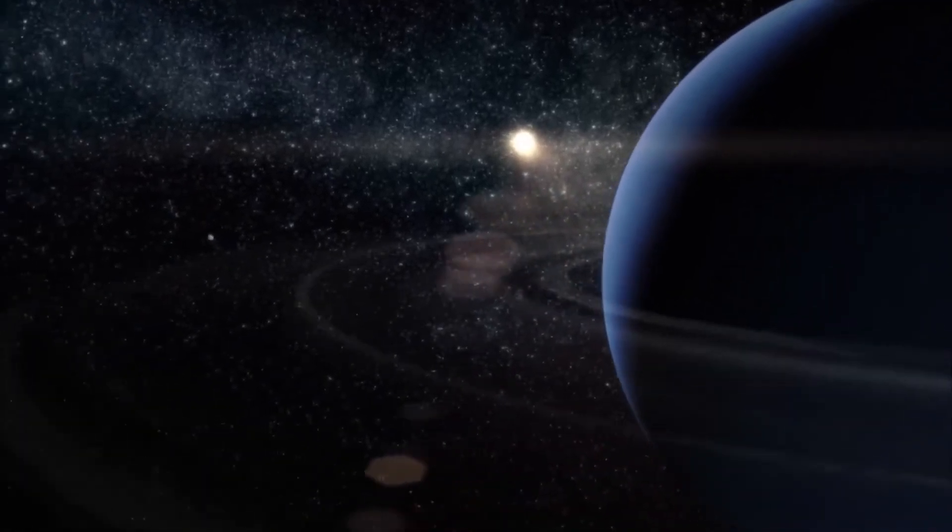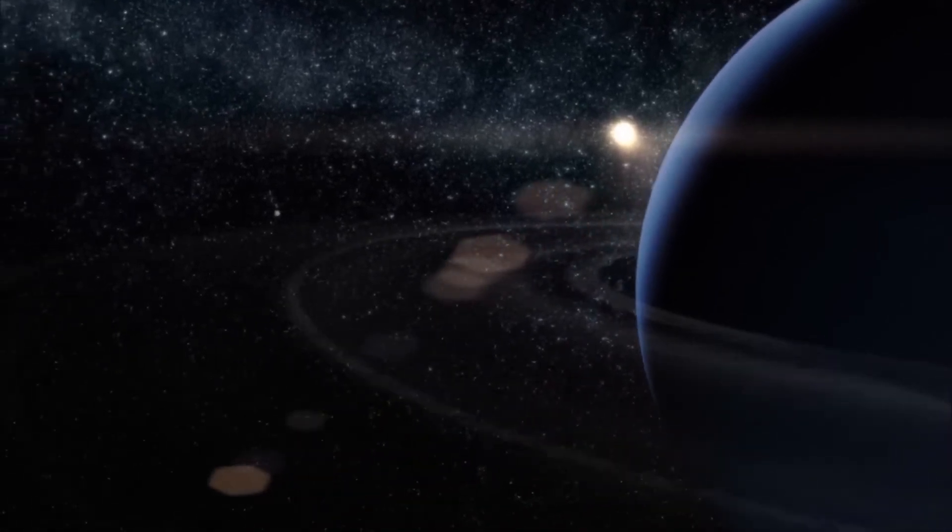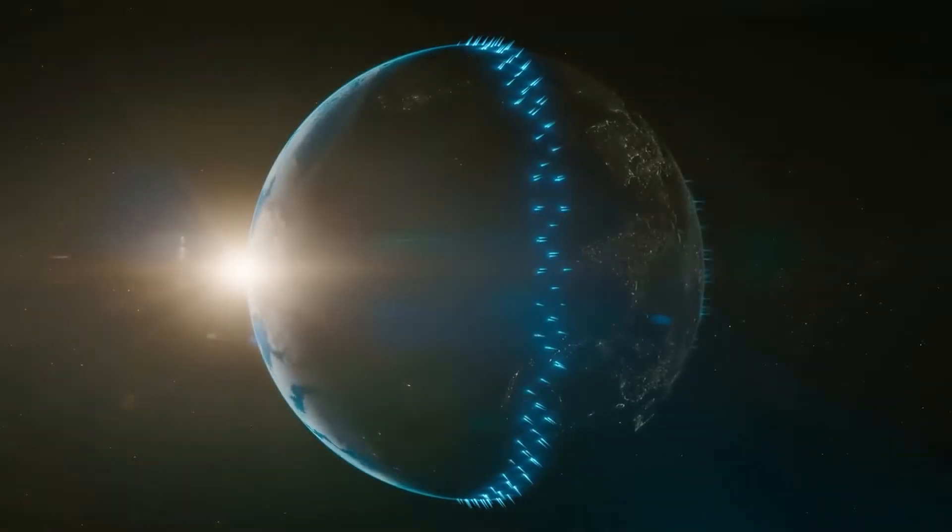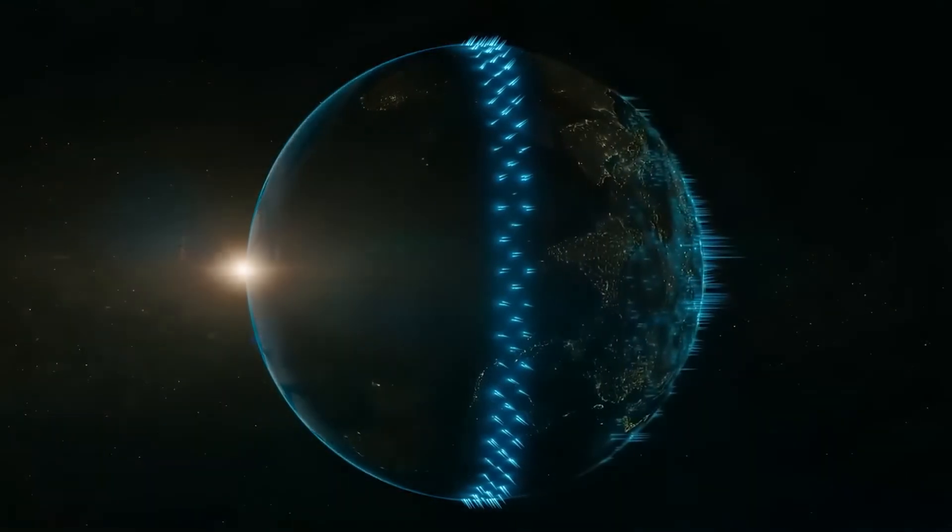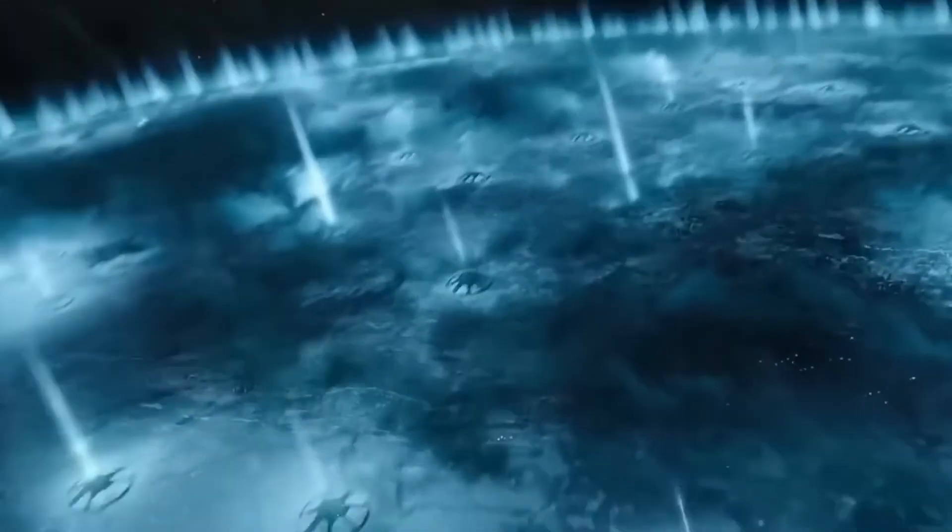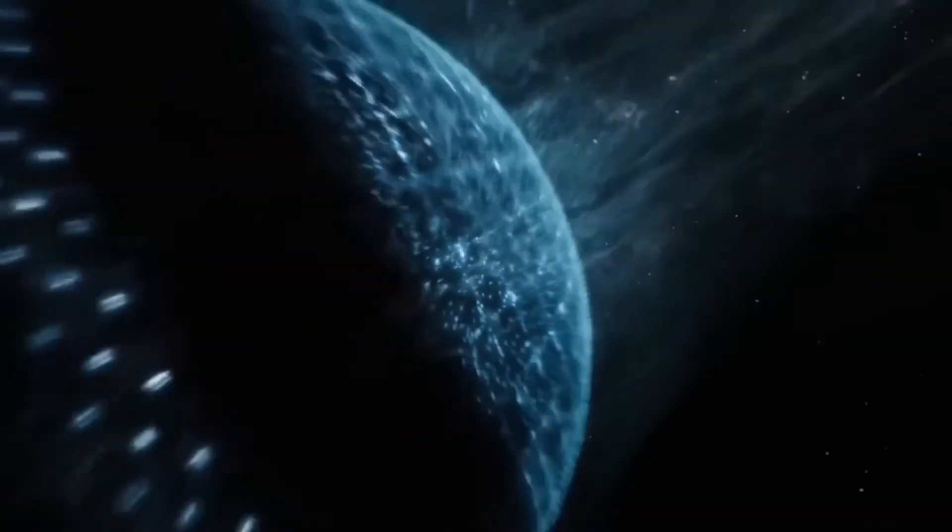Pressure profile: Neptune's atmospheric pressure at its surface (the level where the pressure is equivalent to Earth's sea level pressure) is approximately one bar, which is about 100 times greater than Earth's sea level pressure. However, Neptune doesn't have a solid surface like Earth. Rather, its atmosphere gradually thickens as you go deeper.